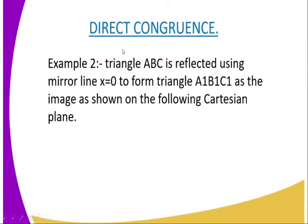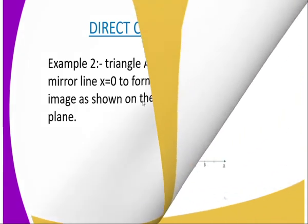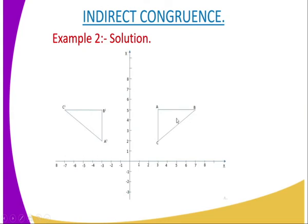For the second example: triangle ABC is reflected using mirror line x equals zero to form triangle A prime B prime and C prime, as the image shown on the following Cartesian plane. This example illustrates opposite or indirect congruence. After reflection, this triangle does not have the same orientation as the original, because the vertical side is on the right-hand side in the object but on the left-hand side in the image.